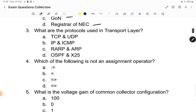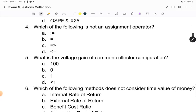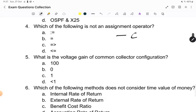For third question it was from computer network. What are the protocols used in transport layer? TCP UDP, IP ICMP, RARP, ARP, and OSPF and X25. Next question was this is from C programming. So which of the following is not an assignment operator? You can see among this, this is the equality operator not assignment operator.